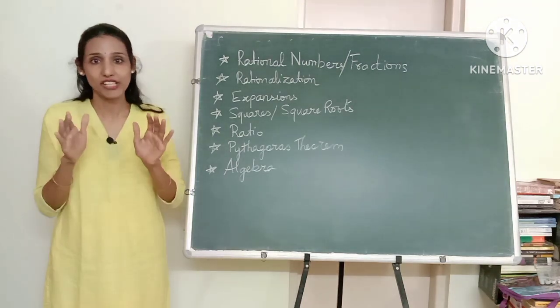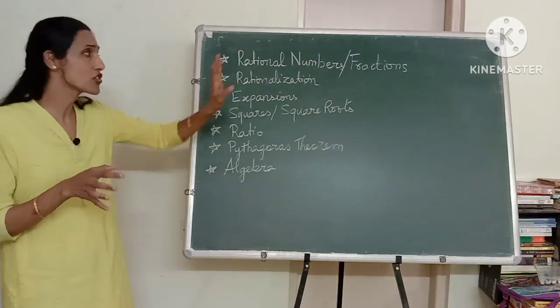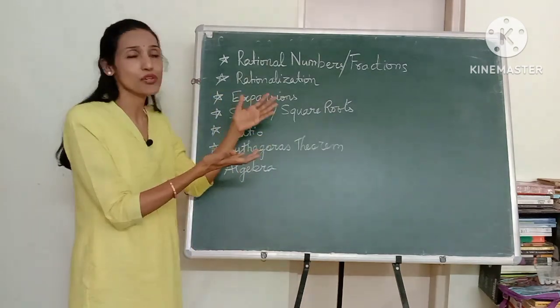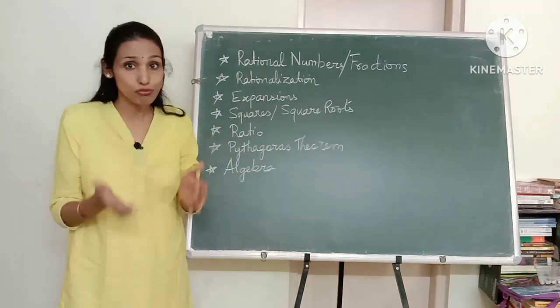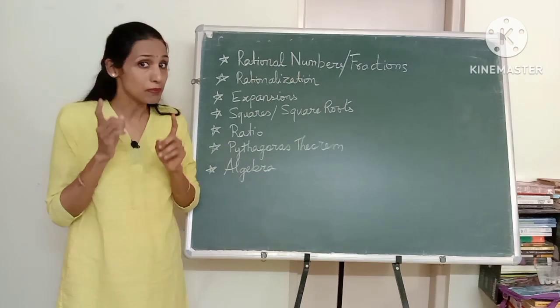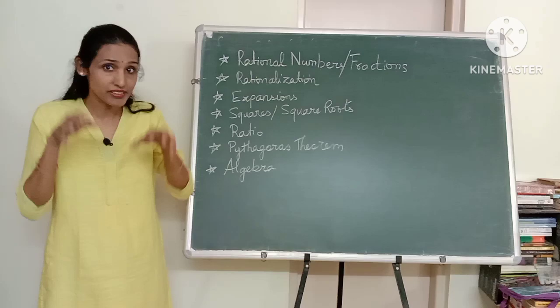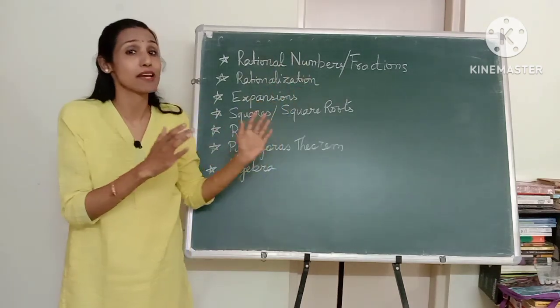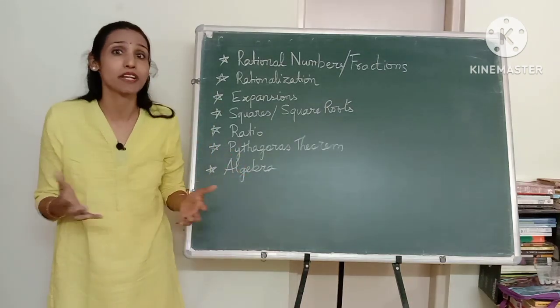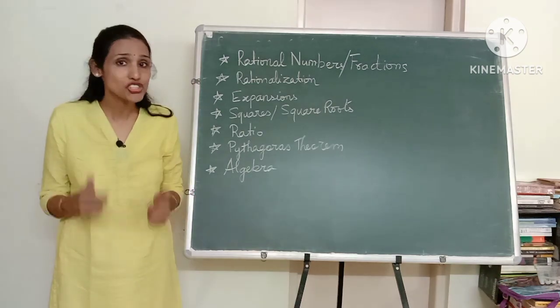Well the only solution is that you take some time out and check which of these chapters you are weak in. Suppose you are weak in fractions and expansions. So take some time out, revise your fractions concept, go through the expansion formulae, spend some time and then come back and solve the trigonometry questions and believe me you will feel a great difference. Your confidence level increases because now your foundation in fractions and expansions will be much better. So you will solve the same questions in a much better way and that is the only way of improving in trigonometry and I'm sure that you will.